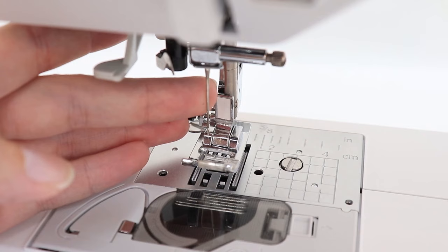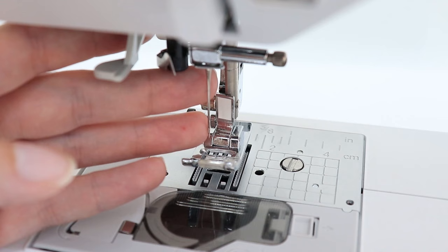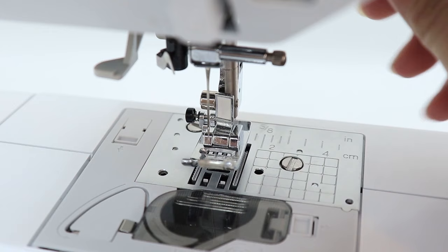The first thing you want to do is make sure that your sewing machine is off. Since we're going to be placing our fingers next to the needle, we want to make sure that we're protected and we don't get poked. So make sure your machine is off so you don't accidentally move the needle.